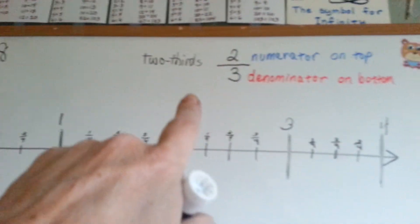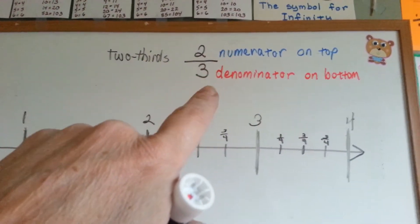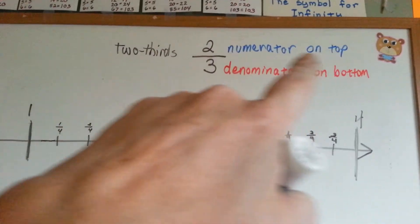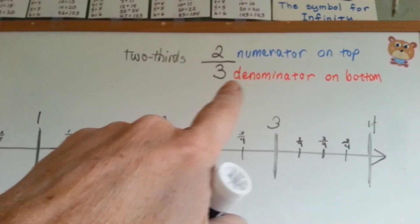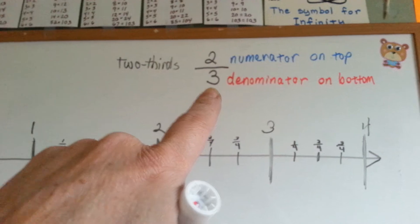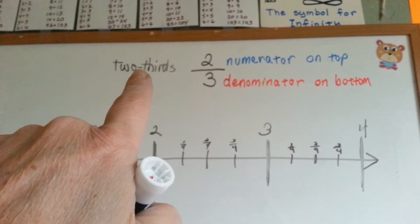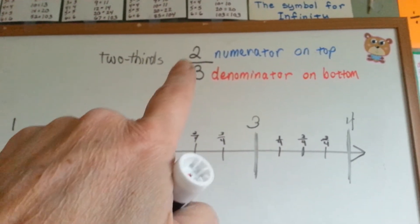All right, the parts of a fraction are the top and the bottom, which are the numerator on the top and the denominator on the bottom. This is two-thirds written like this, two with a hyphen, thirds, two-thirds.